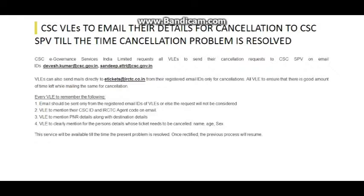You need to write down your CSCID and IRCTC agent code. Then include the details of the PNR and destination — where to where the ticket is. If the ticket is IRCTC or CSC SPB, you can write about the mail address and include the details of the person. You also need to mention which tickets you need to cancel.